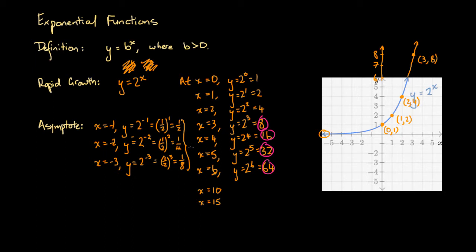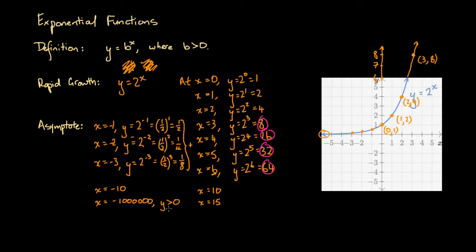Notice that all of these values are positive. We're getting smaller and smaller values of y — one quarter is half of one half, and one eighth is half of one quarter. At x equals minus 1, y equals one half; at x equals minus 2, y equals one quarter; at x equals minus 3, y equals one eighth. We're getting decreasing values of y, but they never decrease completely to y equals 0. Even if you put in x equals minus 10 or x equals minus a million, we'd get a y value that is greater than 0 — very, very close to 0, but never reaching it.